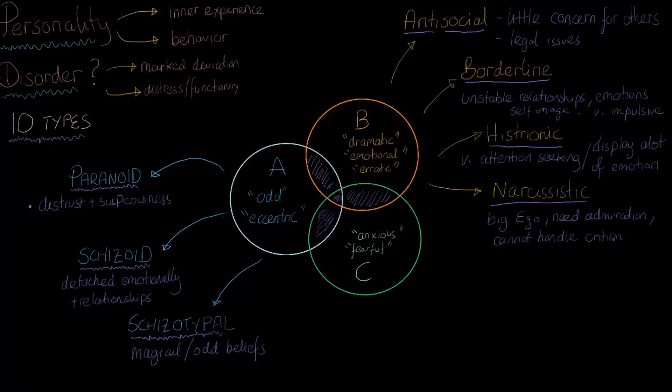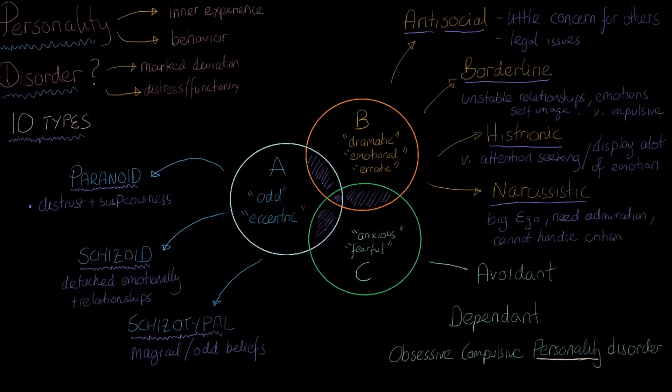Let's move on to our last cluster, the anxious and fearful cluster C. In this cluster, we have three different personality disorders: we have avoidant, we have dependent, and we have obsessive-compulsive personality disorder. I'm going to stress that this is a personality disorder here, as opposed to obsessive-compulsive disorder. Do not mix them, and I'll tell you why in a minute.